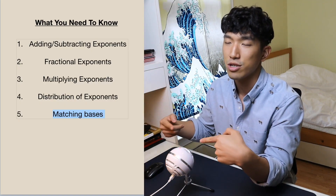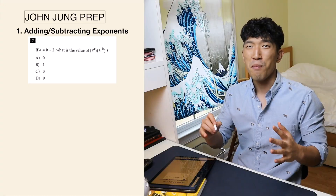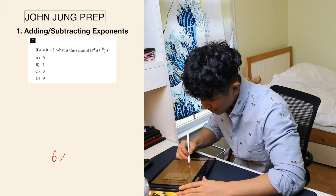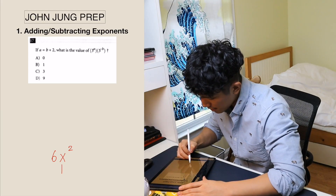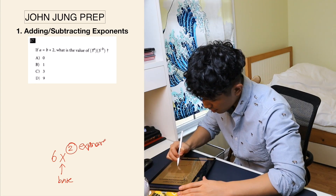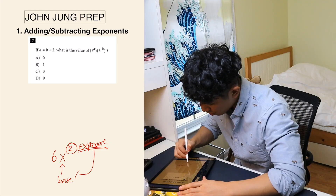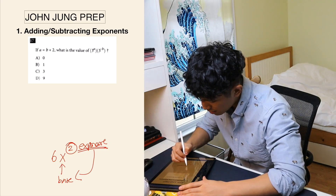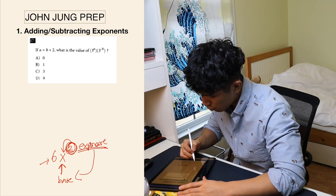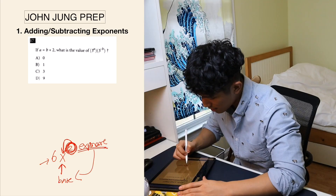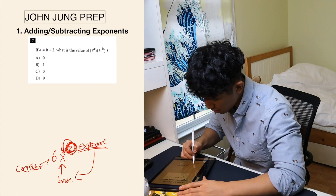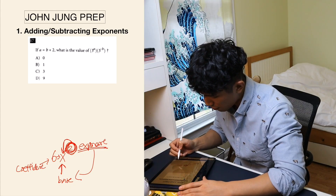In this video, I'm going to use the word 'base' a lot, so let me first explain what the base is. Let's say we have some kind of term called 6x squared. In this case, x is going to be your base, because 2 is your exponent, and whatever the exponent is applied to is what we call the base. We know that 2 is applied directly to the x, therefore x is your base. And 6 is not the base — we call that the coefficient, the number attached to a variable.